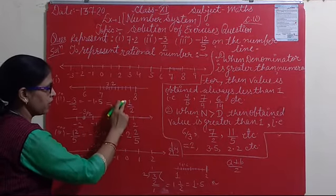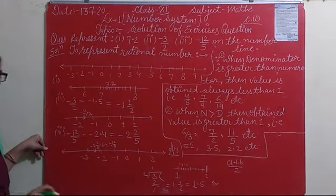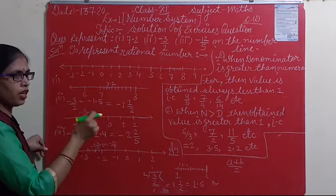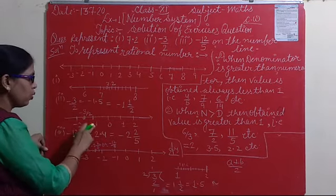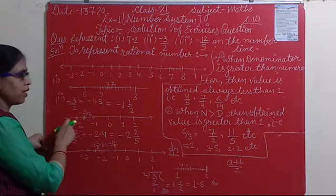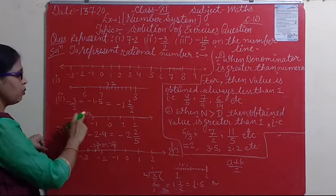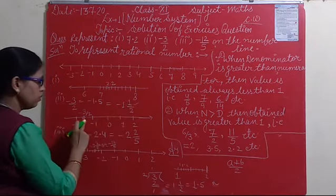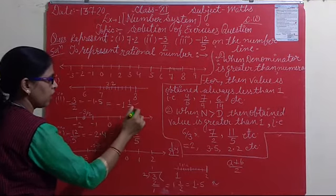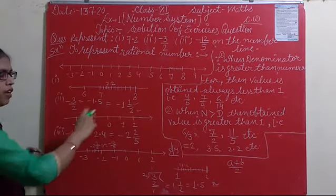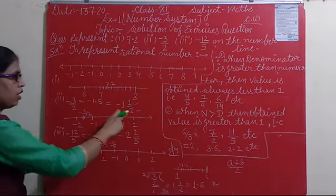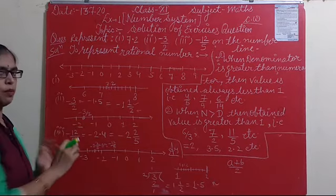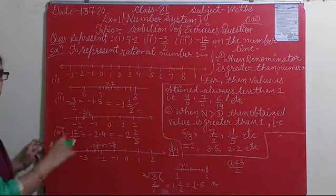So minus 3 by 2, which is minus 1 and 1 by 2, is marked in the middle between minus 1 and minus 2. The numerator tells us which part to mark, and the denominator tells us how many parts to divide into. In a mixed fraction, the denominator means we divide the space between the two consecutive integers into that many parts. This will become clearer in the next question.